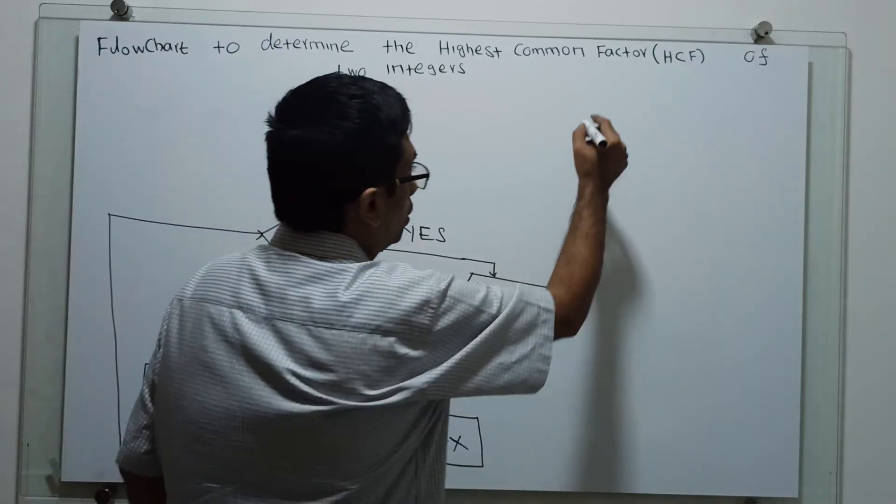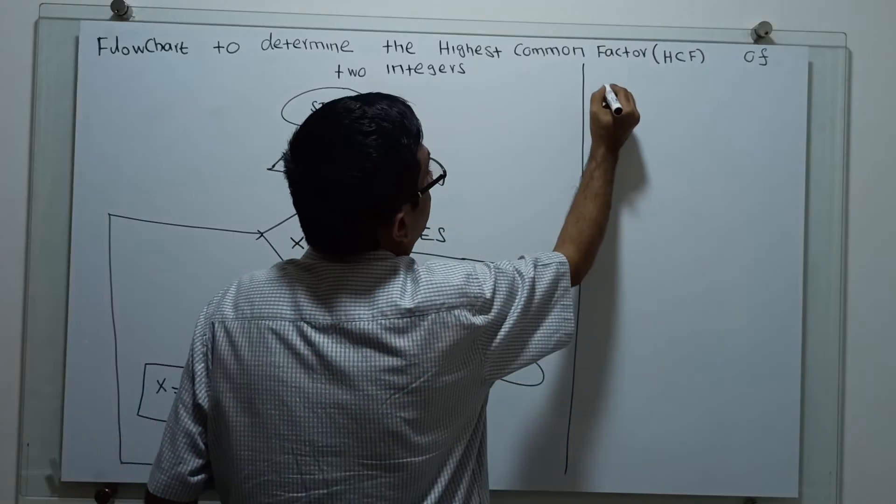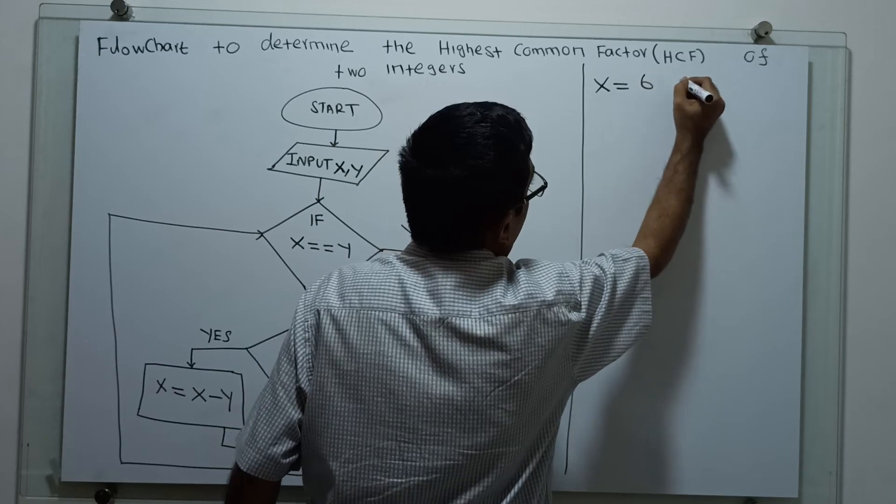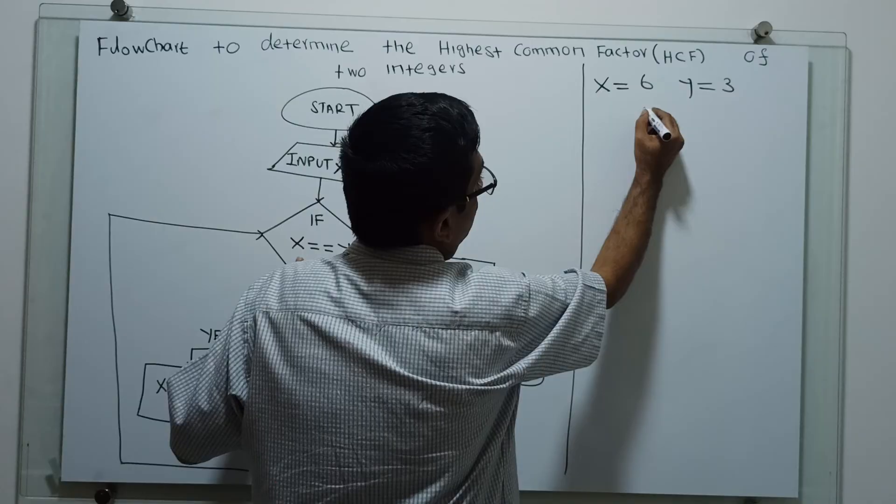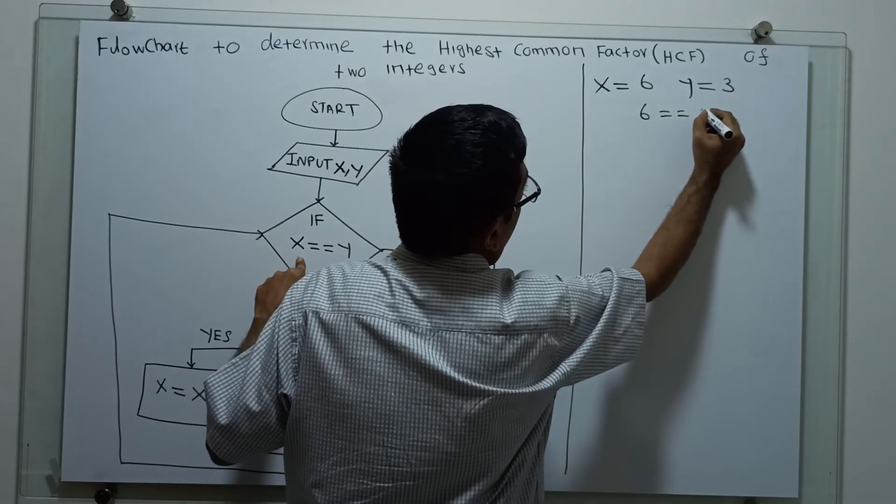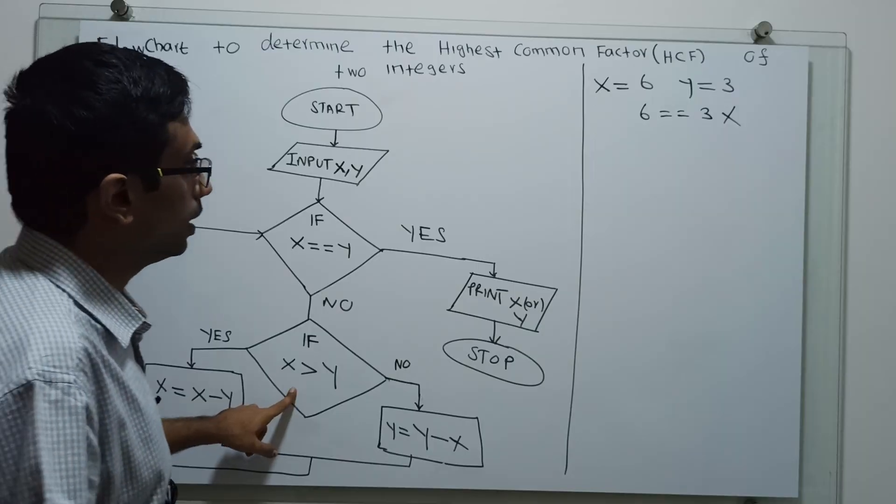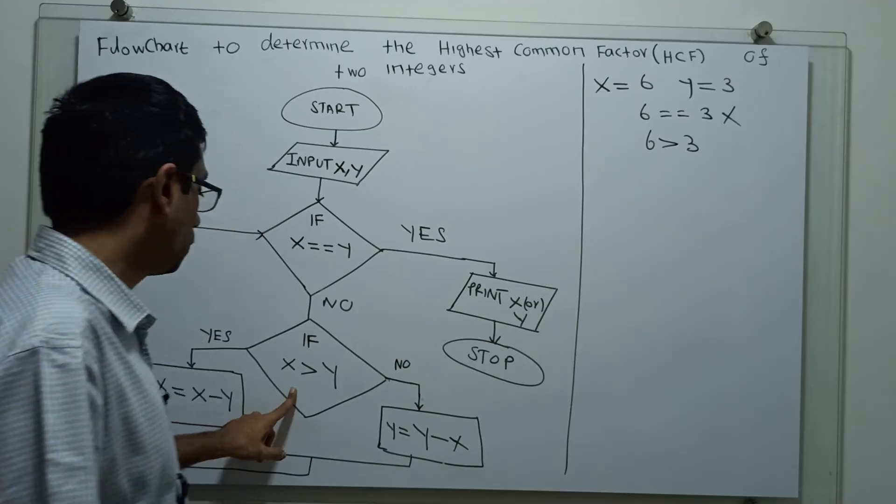We will take two sample inputs and check the logic. Taking x equal to 6, y equal to 3. We will check 6 equal to 3 is false. I will check 6 greater than 3, which is true.